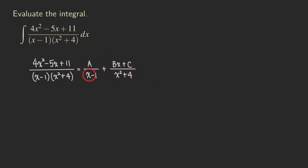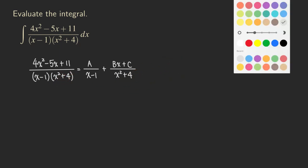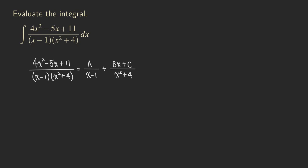We are going to try to get rid of the denominator — we can get the common denominators, combine those two fractions together, and then match the two numerators, because when the two sides are equal and the denominators are the same, the numerators must also be the same. What we can do is multiply everything by x minus 1 times x squared plus 4. That would be the LCD that we are multiplying.